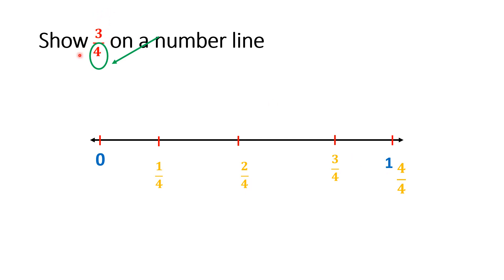We have to show 3/4 on the number line — here it is. We circle it or make a mark on the number line. To summarize: first, make a number line from zero to one; then divide it into equal parts based on the denominator; then write the fractions for each part.